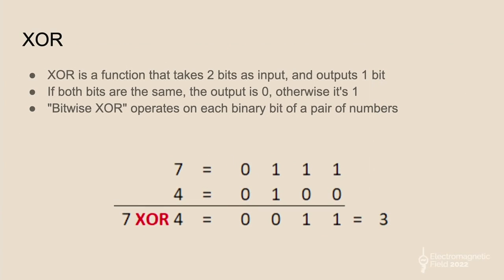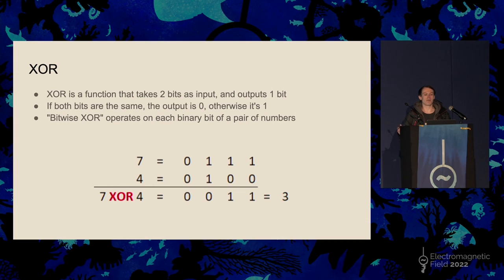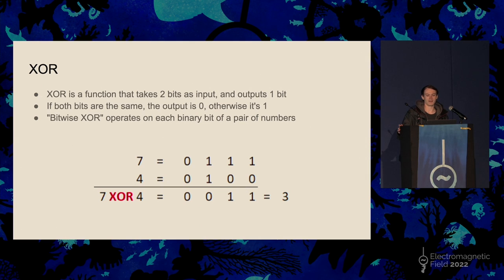Finally, we have XOR. XOR is a function that takes a pair of bits as input and outputs one bit: if both input bits are the same, the output is 0; if they're different, the output is 1. Bitwise XOR means you take two numbers, take their bits, and apply the XOR function to each pair of corresponding bits. For example, 7 XORed with 4: in the first column, 0 XOR 0 becomes 0; in the last column, 1 XOR 0 becomes 1. The result is 0011, which equals 3. So 7 XOR 4 equals 3.